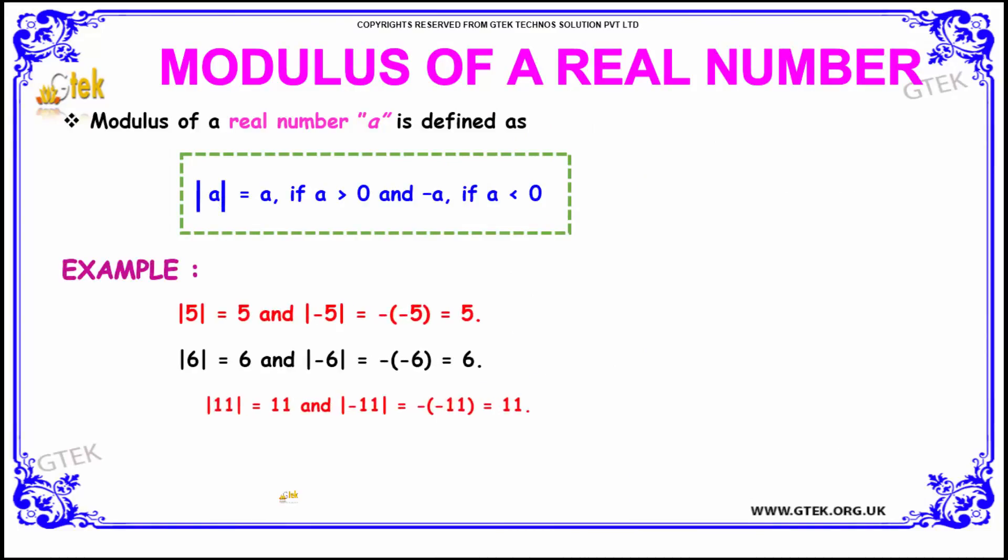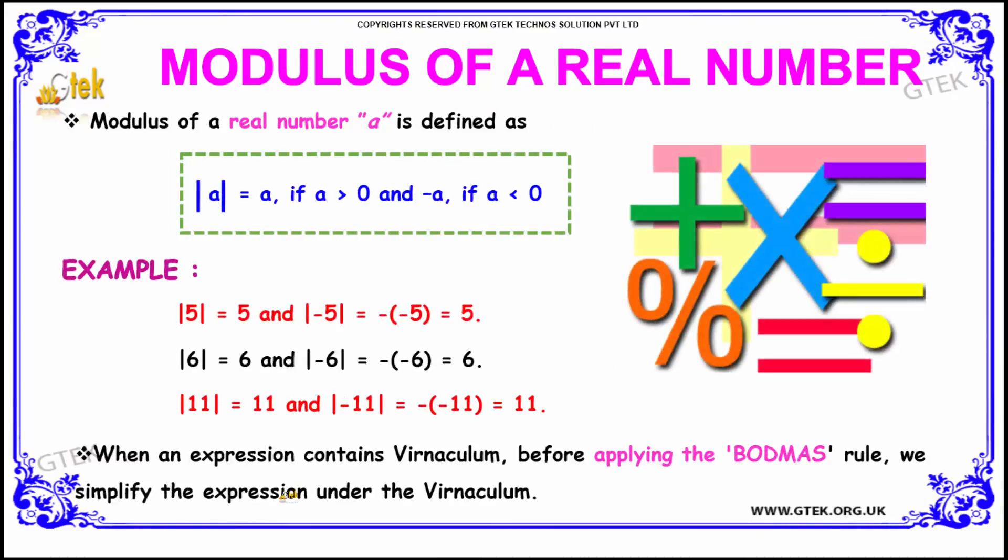The modulus of a real number. The modulus of a real number 'a' is defined as: |a| = a, if a > 0 and |a| = -a, if a < 0. So let us see some examples for the modulus.